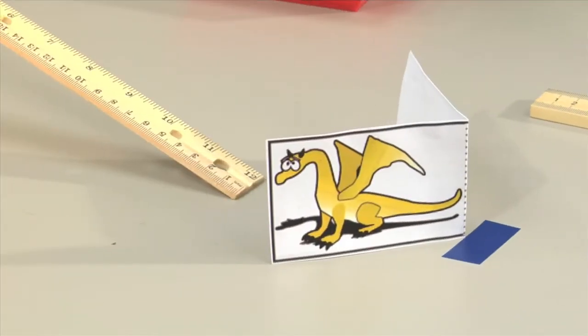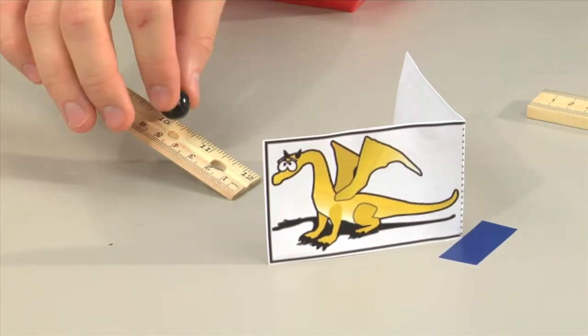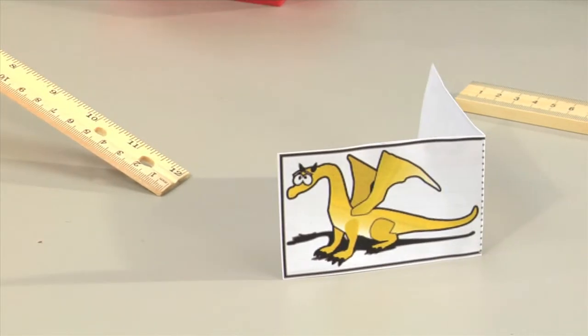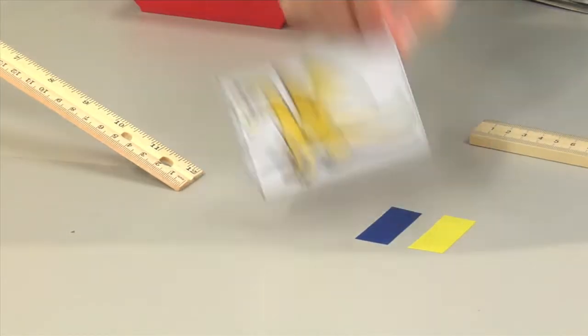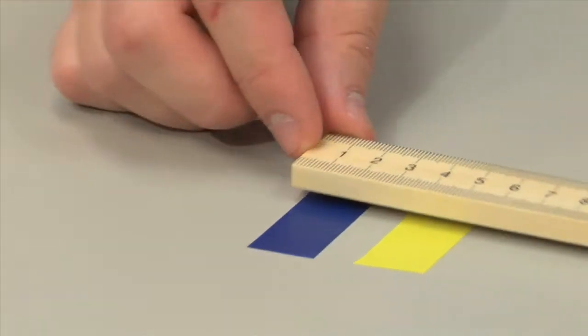For the first trial, place the small marble on the ruler at the 4-centimeter mark and release it along the groove. The dragon should capture the marble and move straight back. Measure the distance.